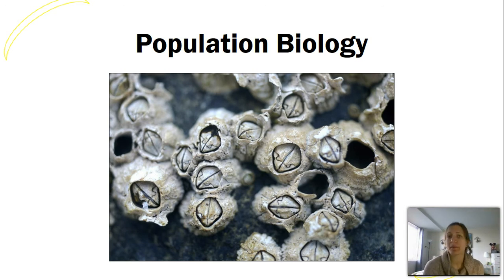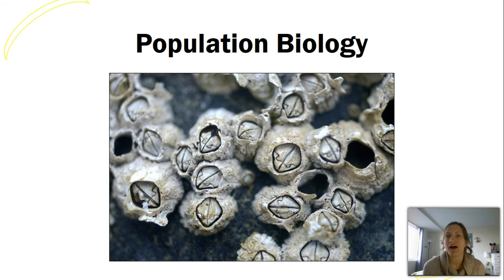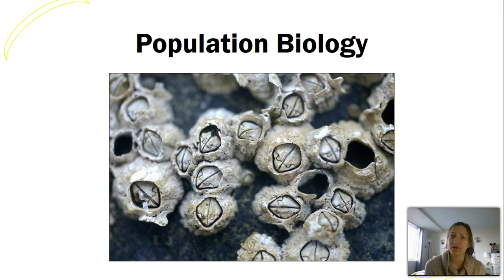Of those five levels, in this unit we'll focus on populations and communities. A population is a group of organisms all of the same species in an area. For example, barnacles on a rock represent a population of barnacles. Within populations we can study how they're growing, changing, how members interact with one another, and mating rituals — all part of population biology.